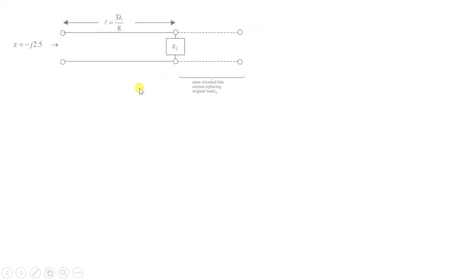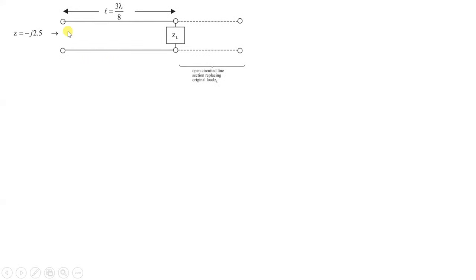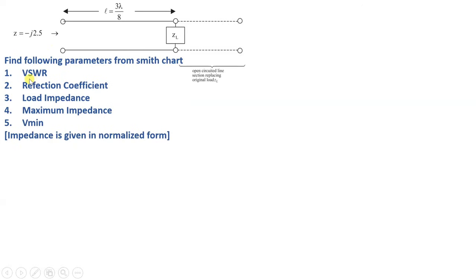We have a transmission line with a load impedance at one end. The transmission line length is given as 3λ/8, precisely 0.375λ, and the input impedance is given as -j2.5. We are required to calculate VSWR, Reflection Coefficient, Load Impedance, Maximum Impedance, and Vmin. The impedance is given in normalized form.